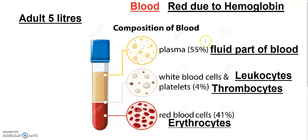The types of blood cells will be detailed in this video. There are three types of blood cells: RBC — red blood cells, also called erythrocytes; WBC — white blood cells, also called leukocytes; and platelets, which are called thrombocytes.